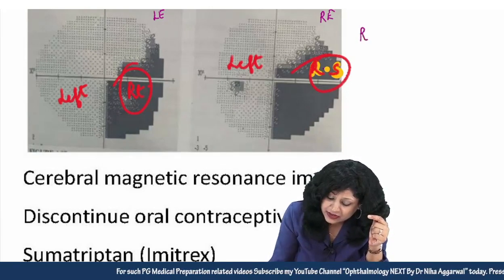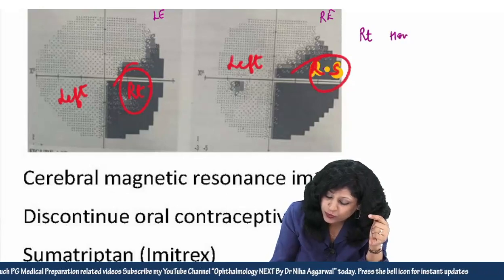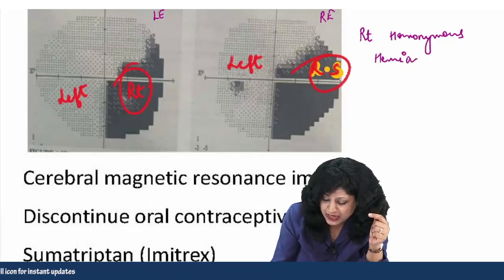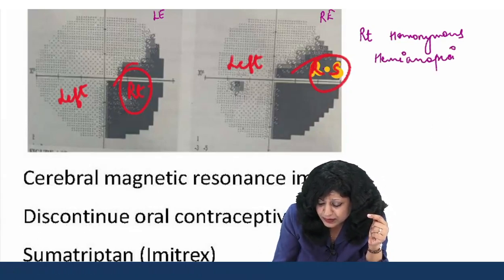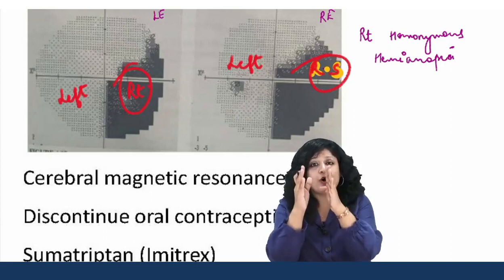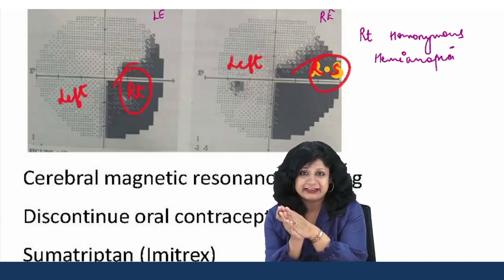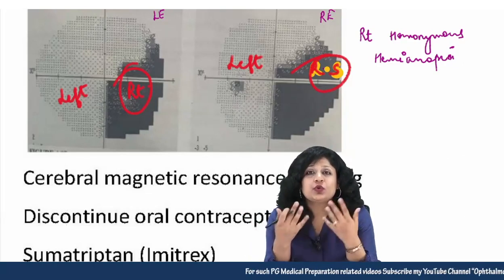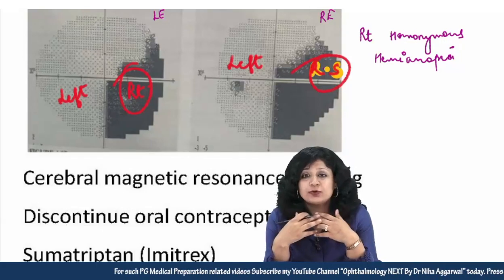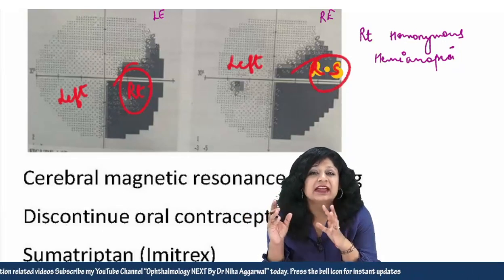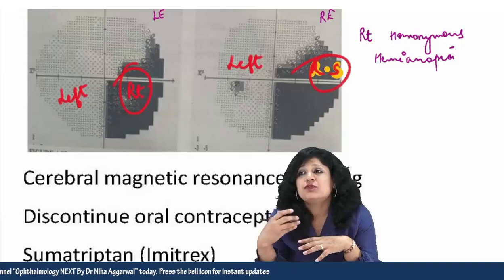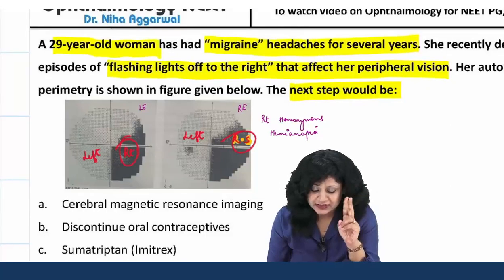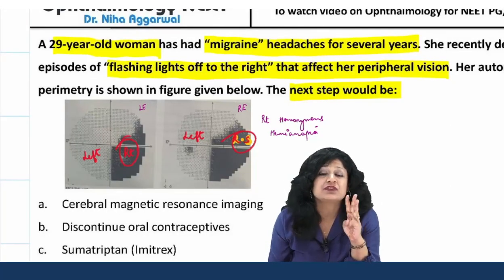We can call it right homonymous hemianopia because, although the whole part is not affected, exactly the same areas of both eyes are affected. It is homonymous and the right side is affected. So this is something causing flashes of light, affecting vision, and causing headache.